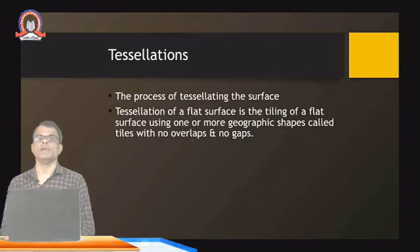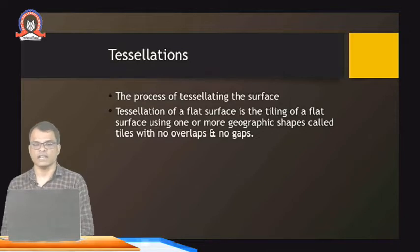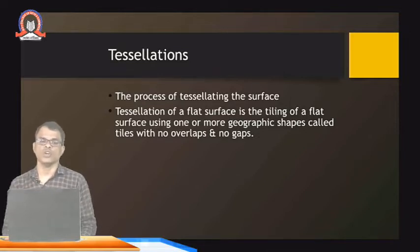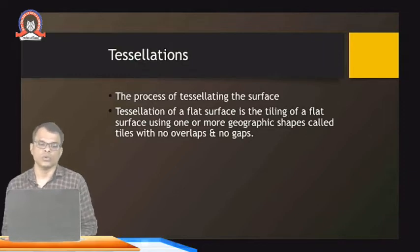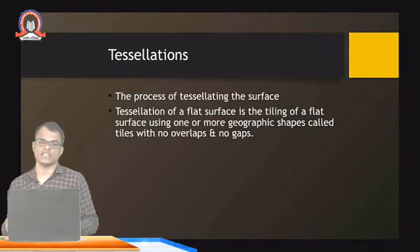Now we come to the main point — tessellation. The process of tessellating a surface: tessellation of a flat surface is the tiling of that surface using one or more geometric shapes called tiles, such that there is no overlap and no gaps. A particular area is divided into small tiles — that is called tessellation.